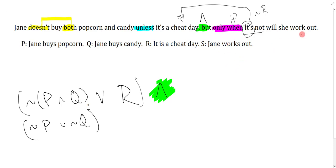Jane will work out, that's S. Is this negation R arrow S or is it S arrow negation R? If this says if it's not a cheat day then she will work out, that's negation R arrow S. So this should say S arrow negation R because of the only, and I put up brackets just to make sure I don't have confusion in my main connective.